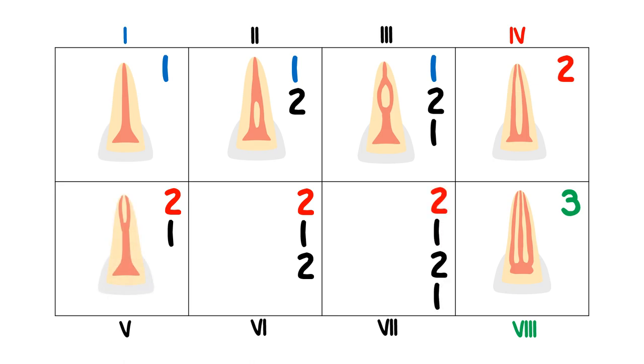Type 5 is 2 canals at the apex joining into 1 before it hits the pulp chamber. Type 6 is 2 canals from the apex joining into 1 and then splitting off into 2 again before it hits the pulp chamber.